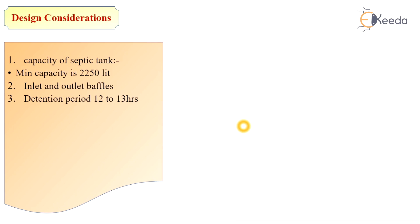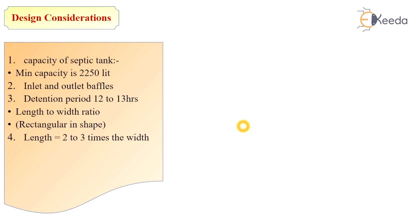Then detention period — generally we consider the detention time for sewage retained in the septic tank as 24 hours, but normally we take it as 12 to 13 hours. The next important parameter is length to width ratio. Septic tanks are rectangular in shape and its length is equal to 2 to 3 times its width. Height and width should not be less than 90 cm, and depth should be 1.2 to 1.8 meters.